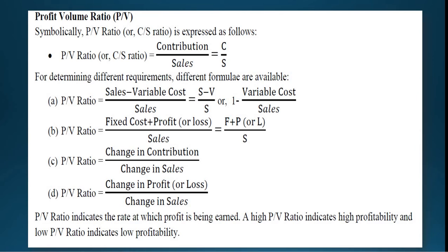The first formula is PV Ratio = (Sales minus Variable Cost) divided by Sales. Next, PV Ratio = (Fixed Cost plus Profit or Loss) divided by Sales. Next, PV Ratio = Change in Contribution divided by Change in Sales. Next, PV Ratio = Change in Profit or Loss divided by Change in Sales. These are the formulas we use to calculate PV Ratio, but most of the time we use the first formula: PV Ratio = Contribution divided by Sales.